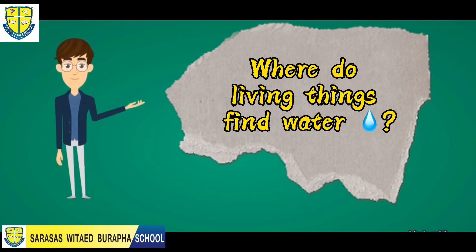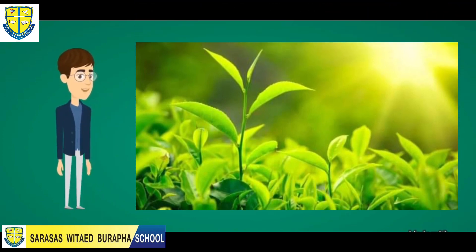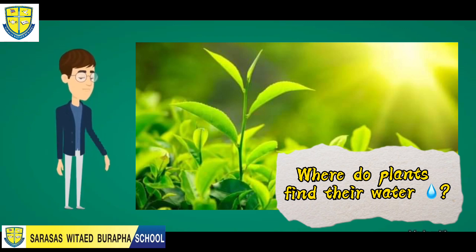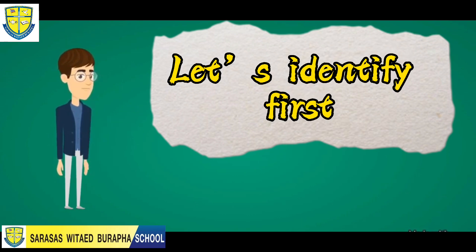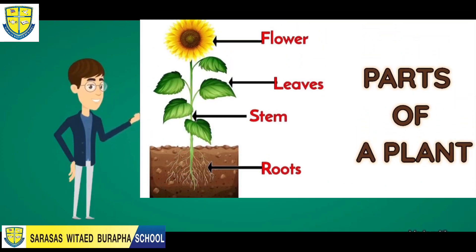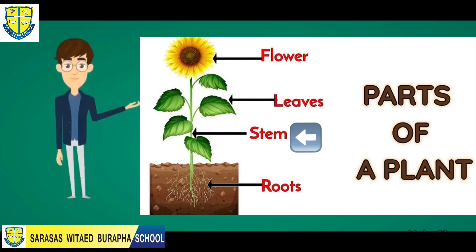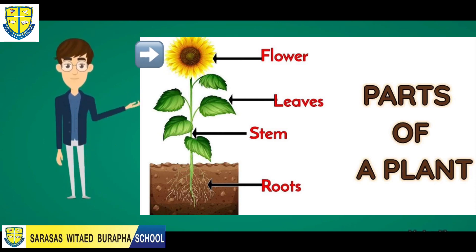The question is: where do living things find water? Let's start first with plants — where do plants find their water? To understand our topic, let's identify first the parts of the plant: the roots, the stem, the leaves, and the flower.